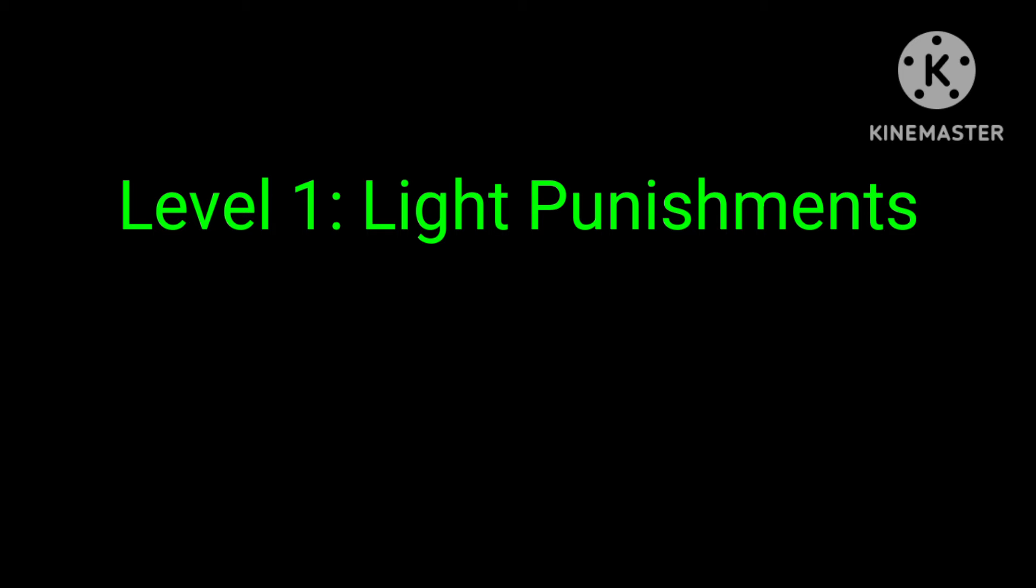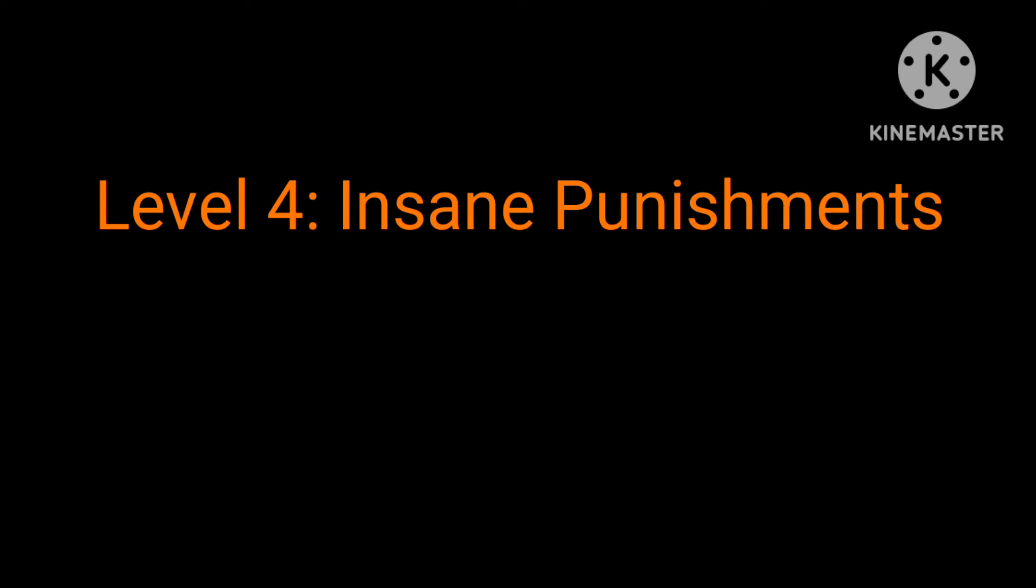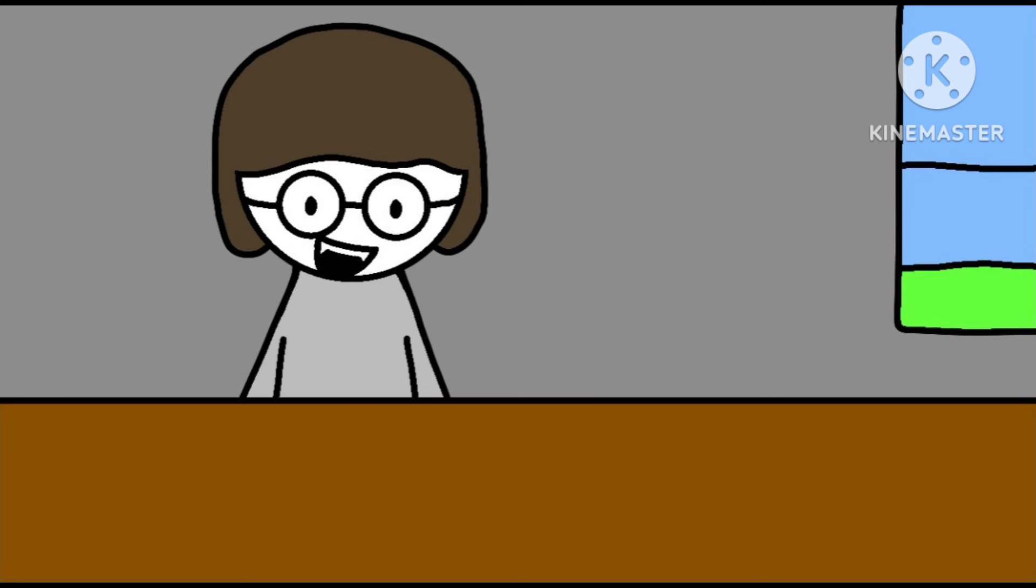Anyway, here are the different levels of punishments I made. Level 1 Light Punishments - punishments like drinking toilet water deserve to be on the first level. Level 2 Harsh Punishments - punishments like getting slapped in the face deserve to be on level 2. Level 3 Brutal Punishments - punishments like throwing bricks at somebody's head deserve to be on this level. Level 4 Insane Punishments - punishments like getting a piano dropped on your head deserve to be on level 4. And lastly, Level 5 Hell Punishments - punishments like getting shot with guns deserve to be on this level. So now, without further ado, let's get started with this video.